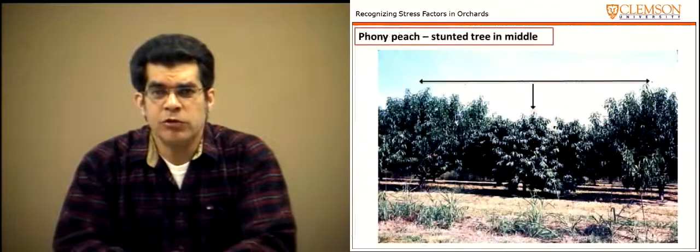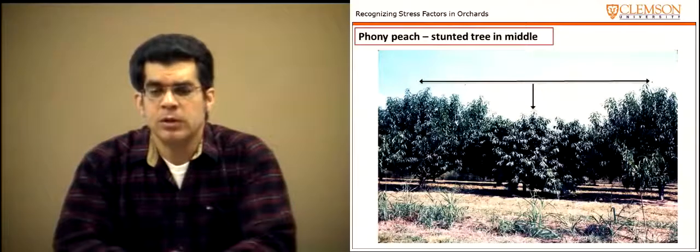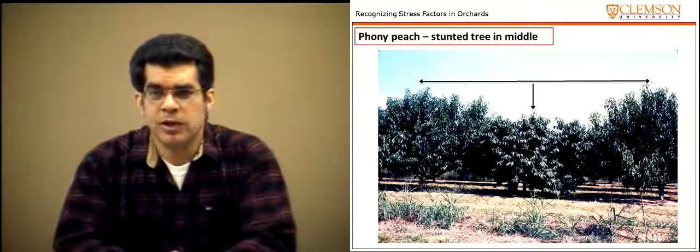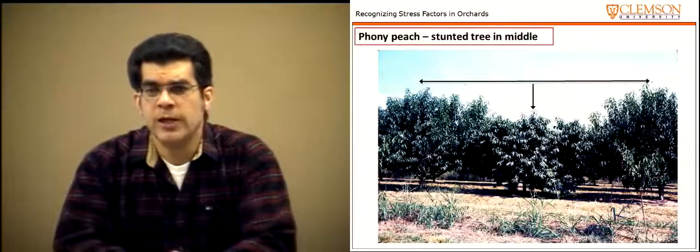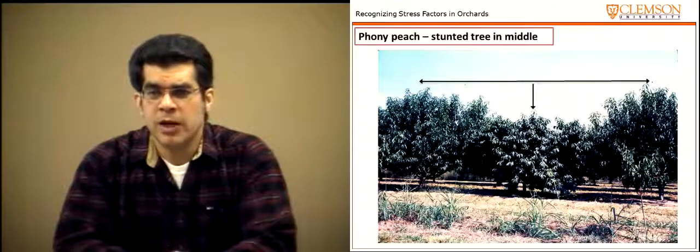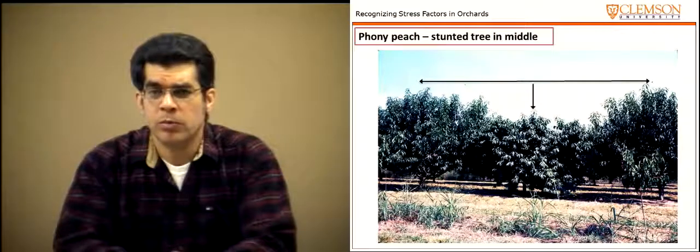Phony peach is an example of a bacterial disease — caused by Xylella fastidiosa — that causes stunting of the tree. The infected tree in the middle of a row appears noticeably smaller than healthy trees of the same age on either side. The management approach for phony disease is to rogue the tree — it is removed and destroyed.